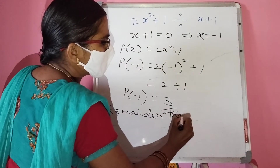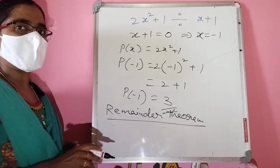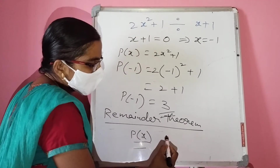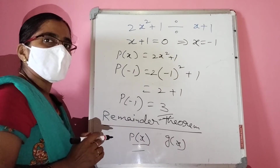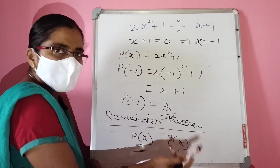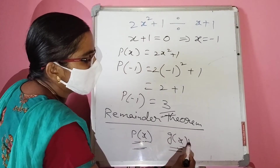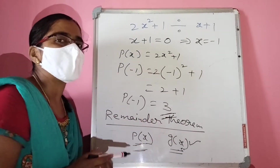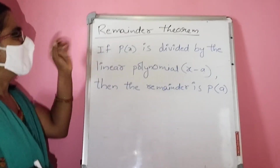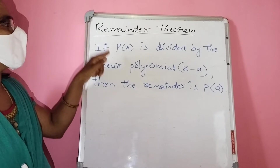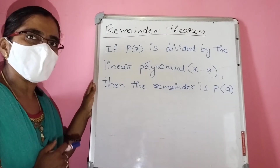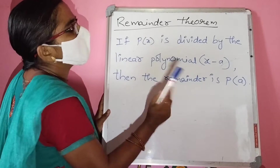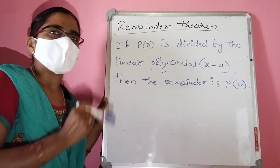Remainder Theorem — very important. If p(x) is a polynomial divided by a linear polynomial x minus a, then the remainder is p(a). Simply substitute a in place of x in p(x), and that result is the remainder.